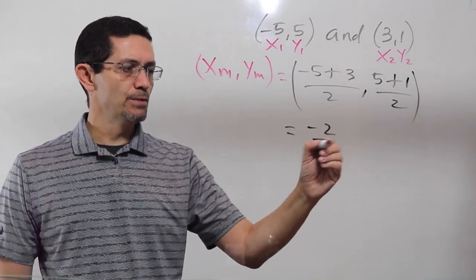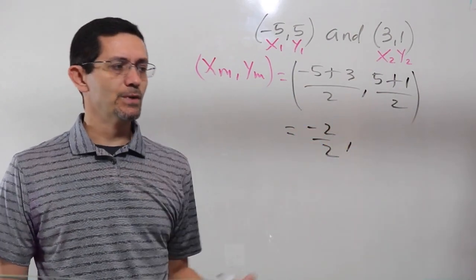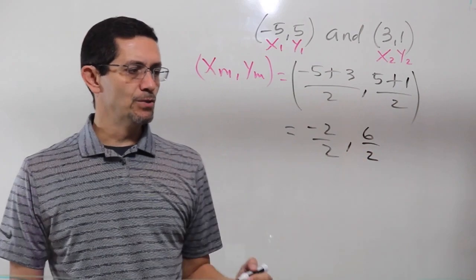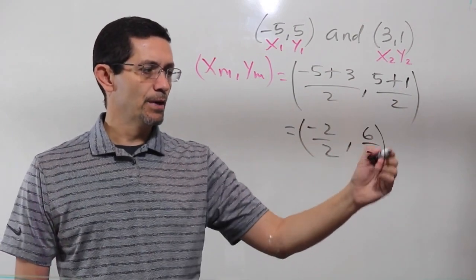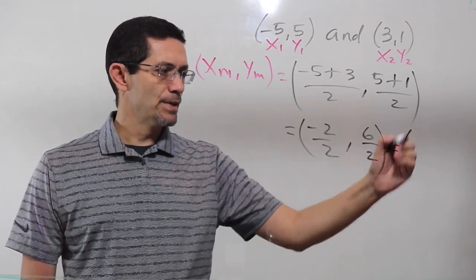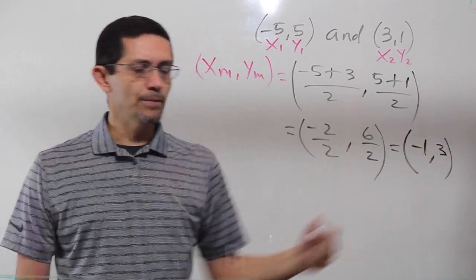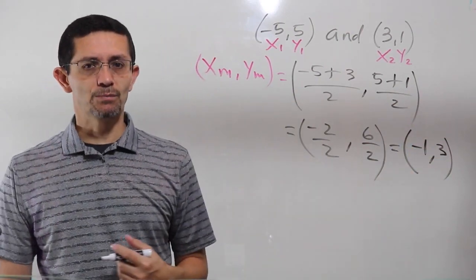Negative 5 plus 3 is negative 2, divided by 2, comma. 5 plus 1 is 6, divided by 2. And then we simplify. Negative 2 divided by 2 is negative 1. 6 divided by 2 is 3. And that's it. That's how we use the midpoint formula.